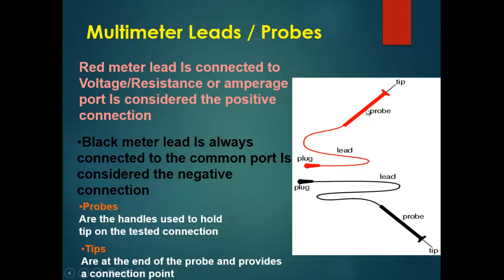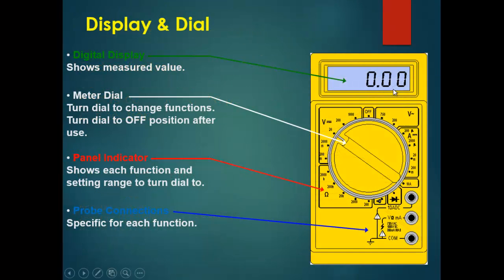The probe is the insulation which is used to handle the tip on the tested connection, and the tips are the conductors connected at the end of the probe. They provide the connection point to the circuit being measured.